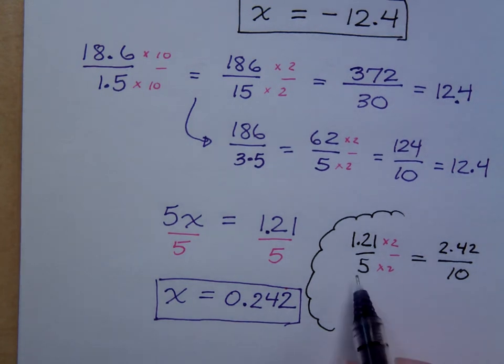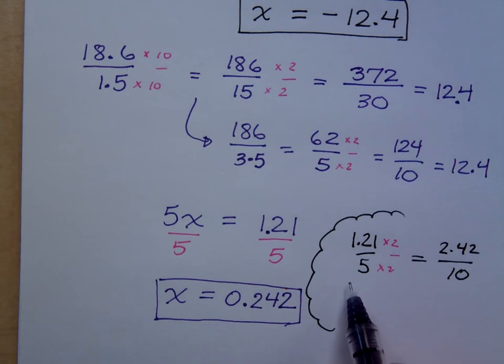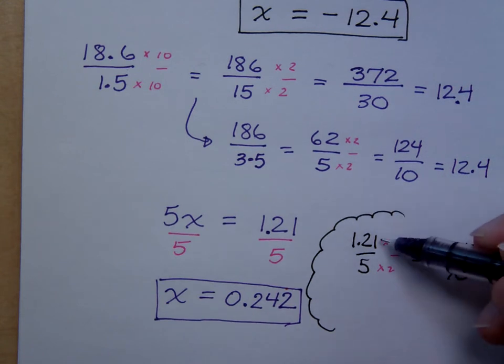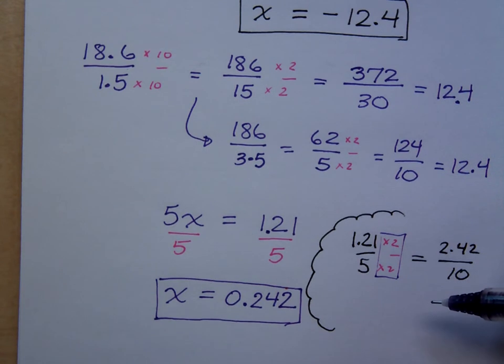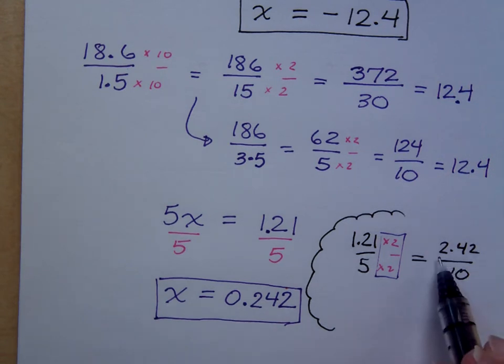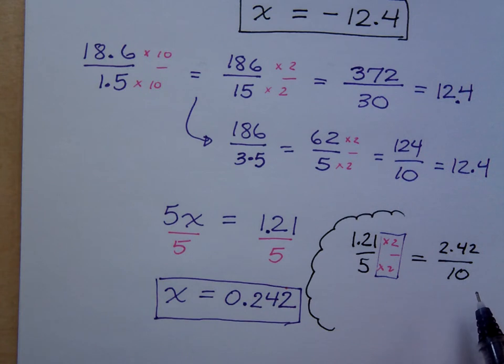And I know that multiplying times 2 when it ends in a 5 can make my division a lot easier, or even multiplication a lot easier. You just have to learn how you can manipulate. Now what is 2 divided by 2 though? That's 1, so did I change my problem? Multiplying times 1 is okay, I just rewrote it to help me out. So I know that 2.42 divided by 10 is just moving a decimal over.